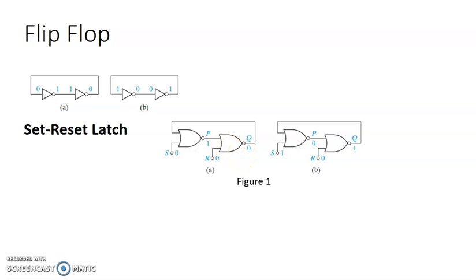One more point I forgot to tell you: what is a flip-flop? Flip-flop is a sequential circuit. So far, we have discussed so many concepts — Boolean expressions, simplification using K-map, Quine-McCluskey method, entered variable map, and implementation using multiplexer, decoder, demultiplexer, encoders, PAL, PLA, ROM. All those things we discussed so far are combinational logic circuits. Flip-flop is a sequential circuit. What is the difference between combinational logic circuit and a sequential circuit?